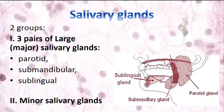We also have minor salivary glands — small salivary glands which are located in the mucosa and submucosa of the oral cavity. They are microscopic structures and they have their own capsule. They are located in connective tissue of the lamina propria of the mucosa and in connective tissue of the submucosa. Their ducts also open on the surface of the mucosa of the oral cavity. They are located in the mucosa and submucosa of lips, cheeks, tongue, hard and soft palate, and they also produce some amount of saliva.